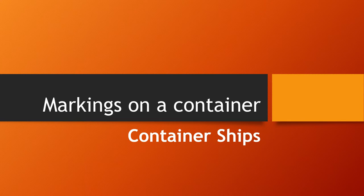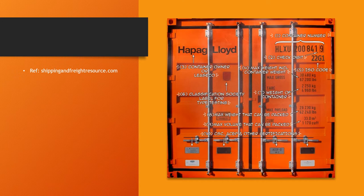What are the markings on a container and what do they stand for? This video will talk about the markings on a container and what each of them stand for. As you can see, this is what a container looks like, and these are the markings. The picture itself tells you what the different markings are and what they stand for, but I'll go further into depth and explain what each of these markings refers to.